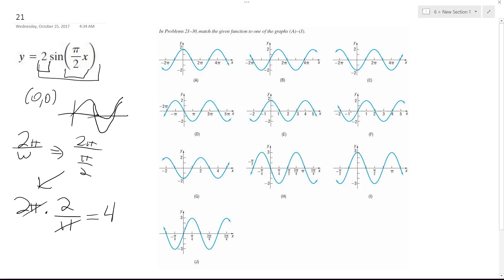So an amplitude of 2 and a period of 4. Looking through all these, I see an amplitude of 2 here. It crosses like a sine does at (0,0) and it's got a period—it completes one cycle from 0 to 4. So in this instance the graph would be f. That's it.